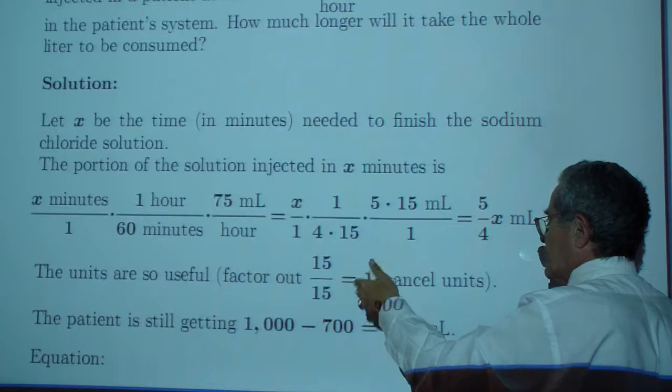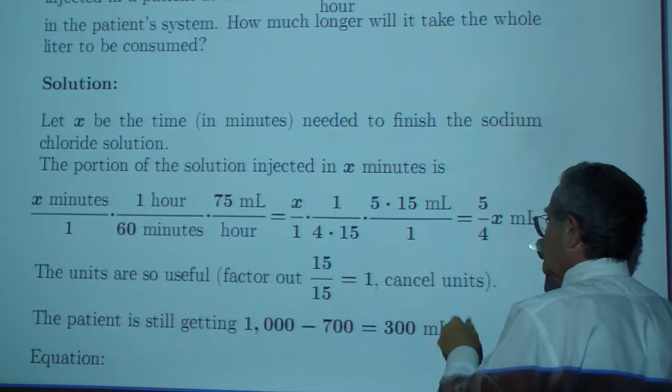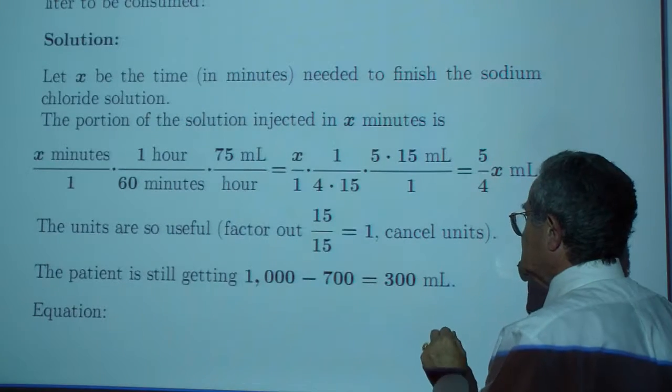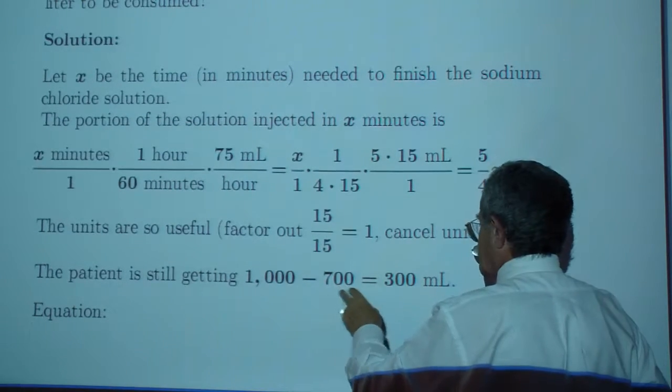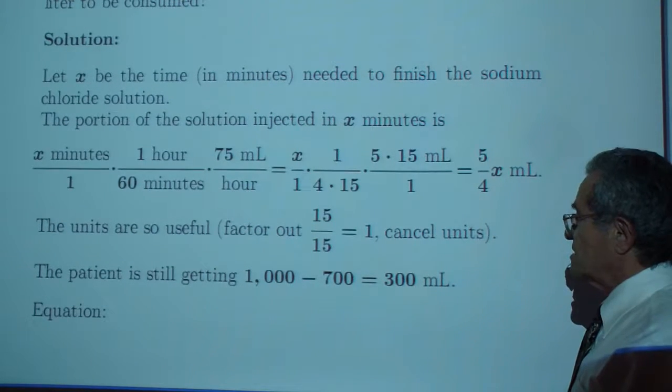The units are useful, factor out 15 over 15, which is 1 right here, and cancel the units. The patient is still getting 1,000 minus 700 or 300 milliliters. That's what we still have to inject.